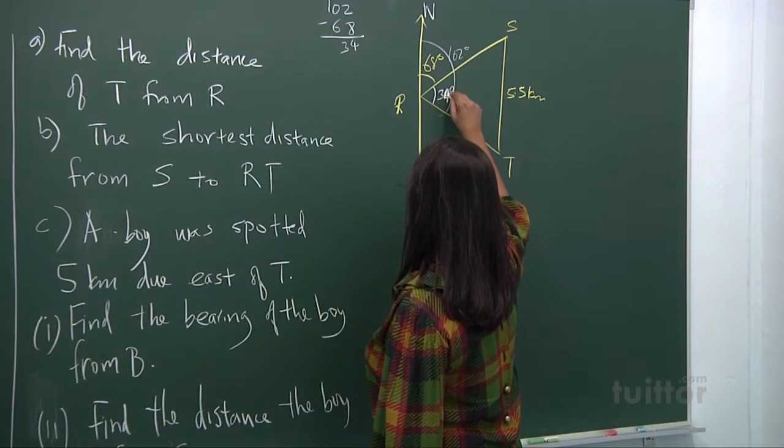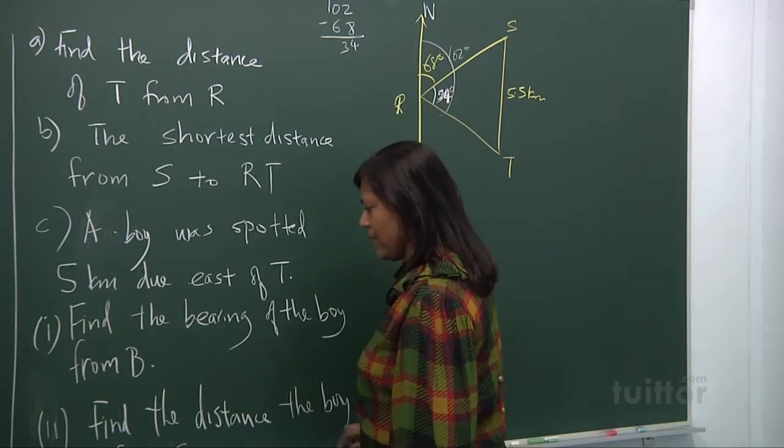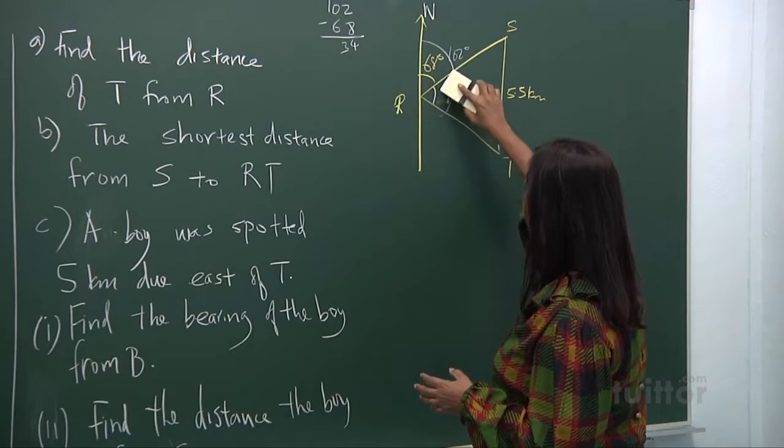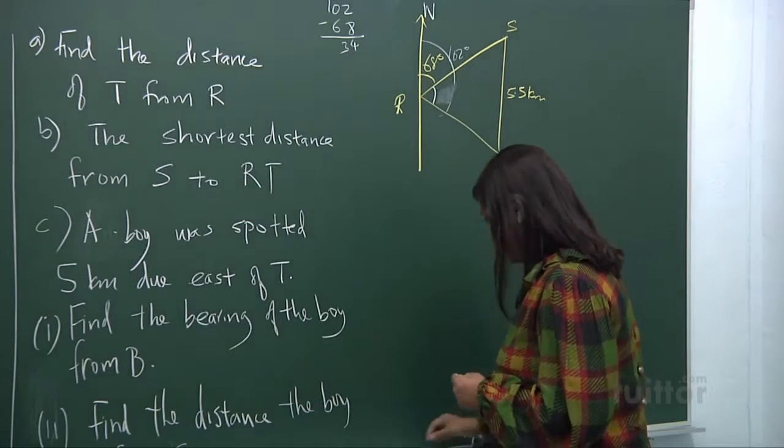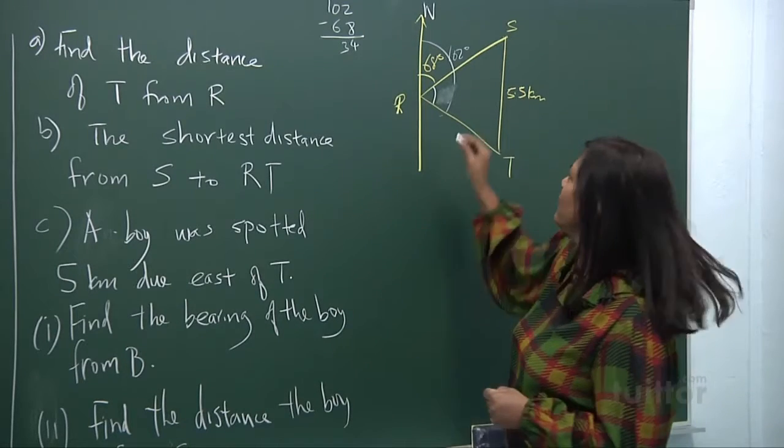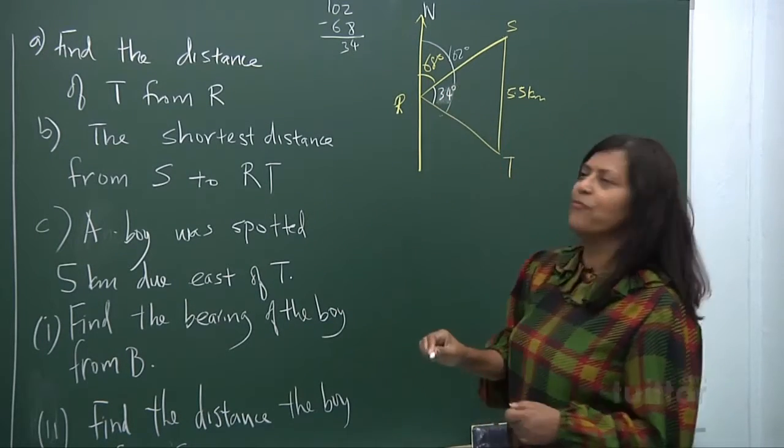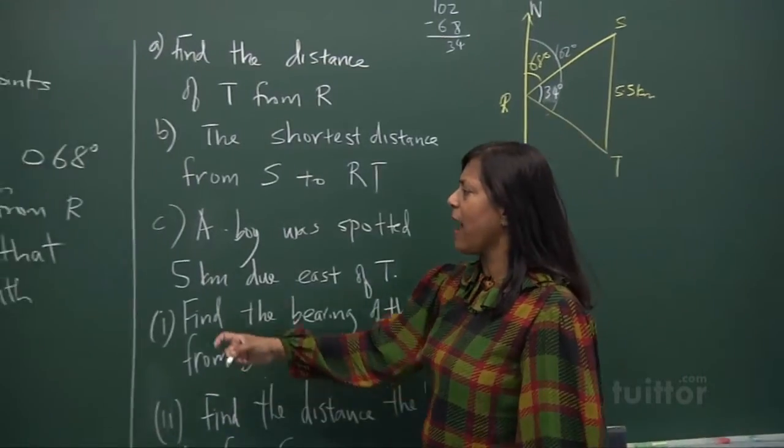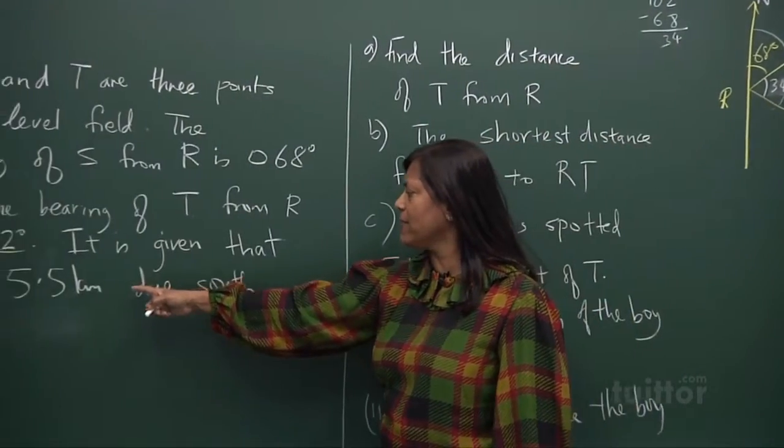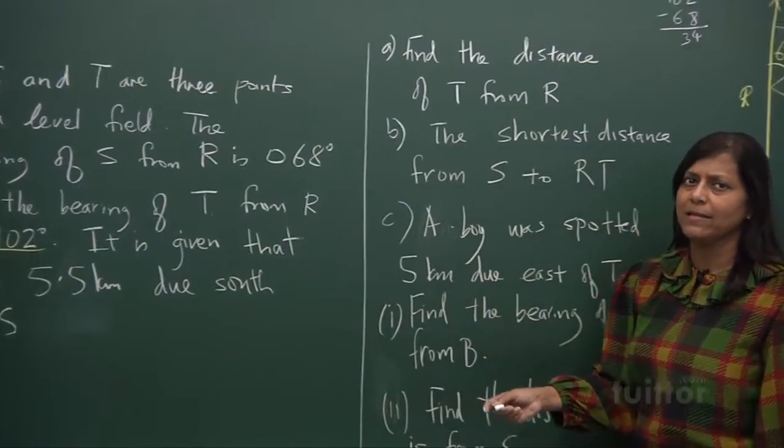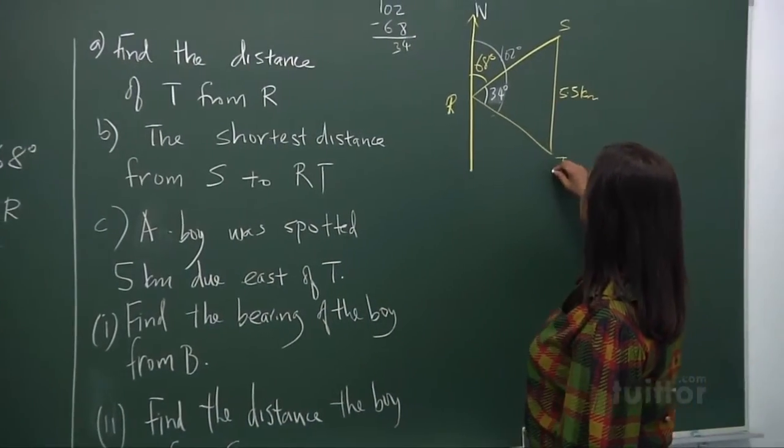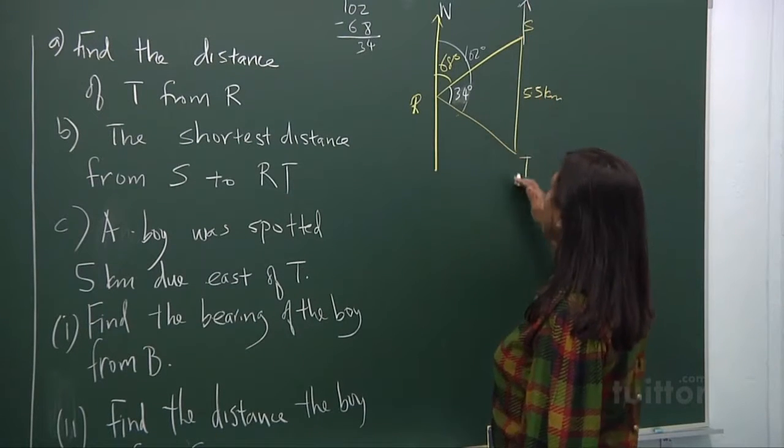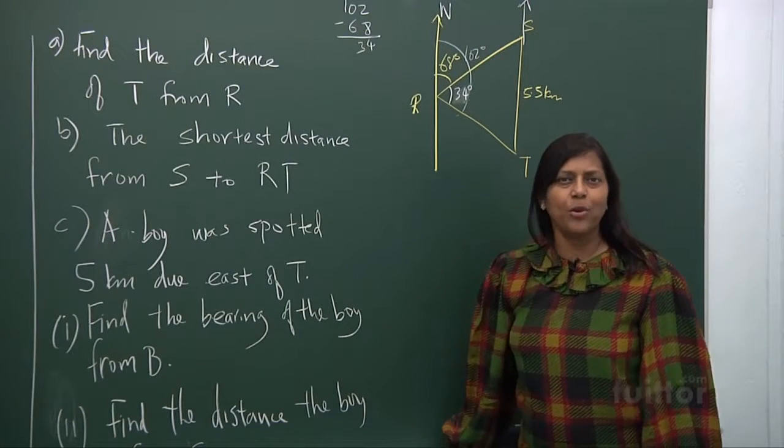So this angle here is 34 degrees. It's good to write as much information as you can in your picture, but I don't like sometimes my untidy writing. I tell my students we need, and I must be a role model too, 34 degrees. Now it's given that T is 5.5 kilometers due south of S. When you say south, it's 5.5. So this is your north, north, south, east, west. Now we are ready.